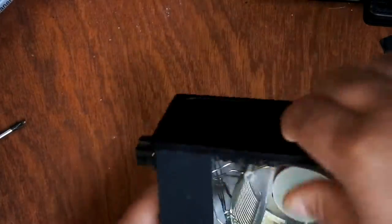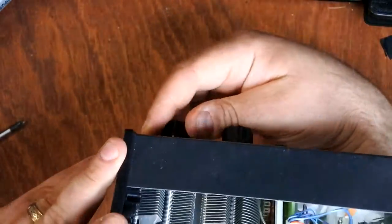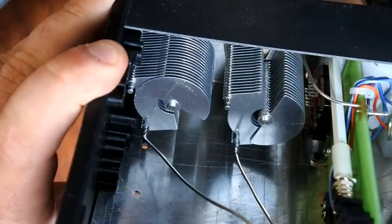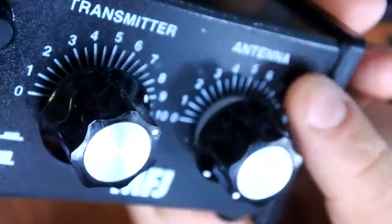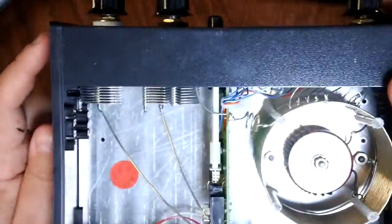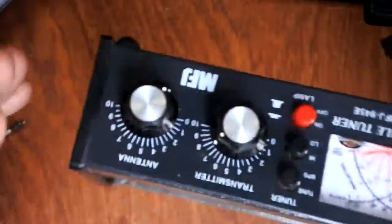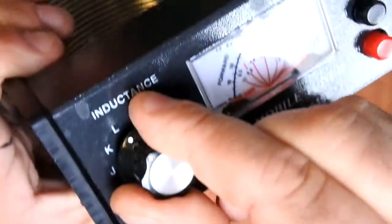So if we open it up, you'll see it's actually quite a simple device. Turn around here, you've got your two variable capacitors. One's called transmitter, one's called antenna. So the antenna one goes to the, goes out to the, is at the antenna end of the circuit. And the transmitter one is at the transmitter end. And there's our variable inductor, which is controlled by using this big knob.